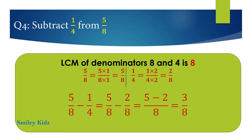The right answer is 3 by 8. To subtract unlike fractions, first take the LCM of the denominators. LCM of denominators 8 and 4 is 8. 5 by 8 equals 5 by 8, and 1 by 4 equals 2 by 8. So 5 by 8 minus 1 by 4 equals 5 by 8 minus 2 by 8 equals 3 by 8.